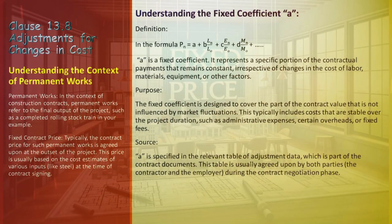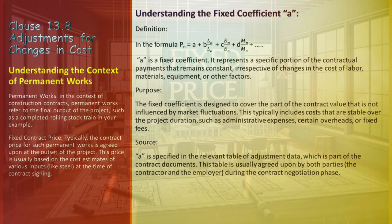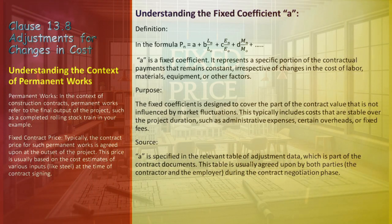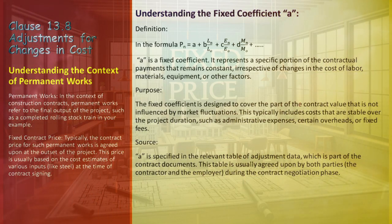In the formula PN = A + B(LN/L0) + C(EN/E0) + D(MN/M0), A is a constant component representing a part of contractual payments that stays unchanged regardless of fluctuations in the cost of labor, materials, equipment, or other variables. The fixed coefficient is meant to cover the portion of the contract value that remains unaffected by market changes, typically including expenses like administrative costs, some overheads, or fixed fees that are stable throughout the project.